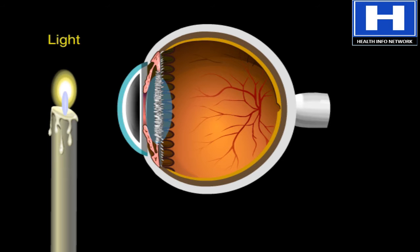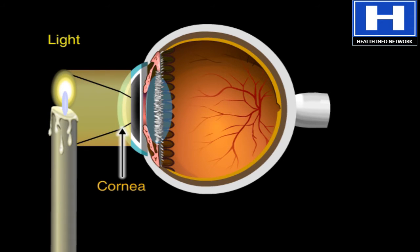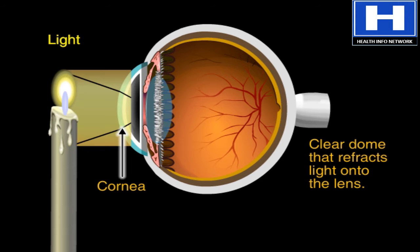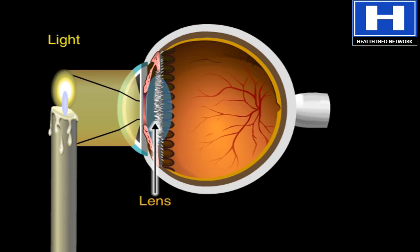This candle can help us understand how the eye captures images and then sends them to the brain. First, the candlelight passes through the cornea. As it does, it's bent, or refracted, onto the lens.